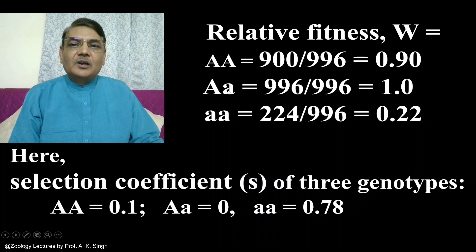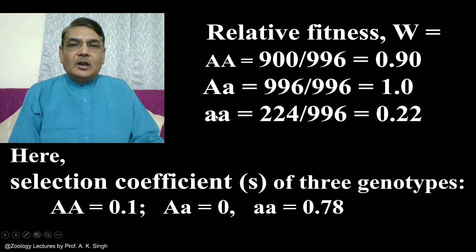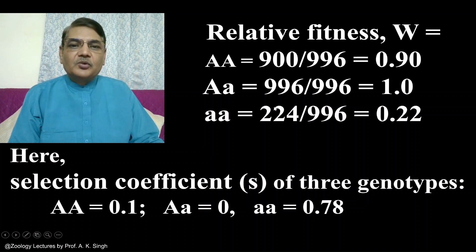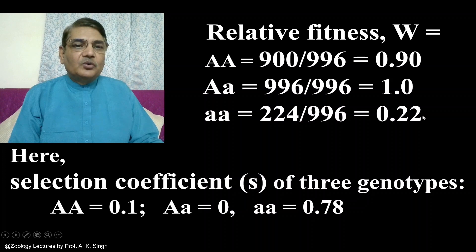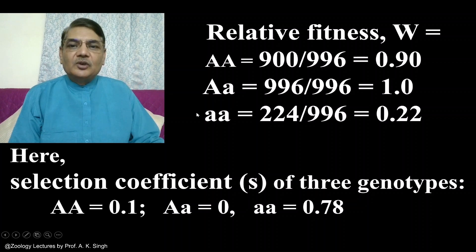For the other genotype, Aa, its number is 996 divided by 996, which gives a relative fitness of 1. This way we know the W values of all three genotypes.